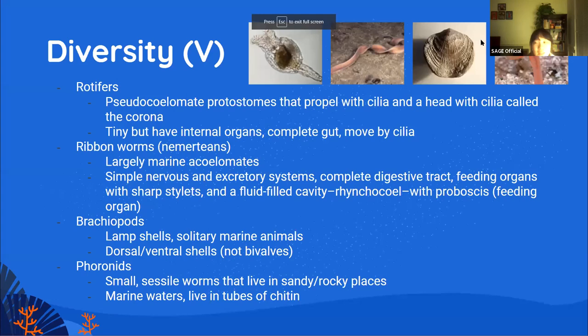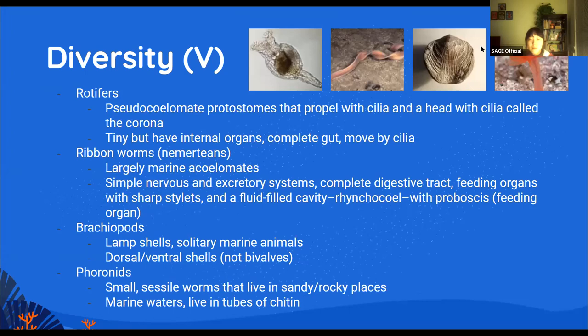Phoronids live in sandy and rocky places. The main cool thing about them is that they live in tubes made of chitin — if you remember from our fungi lesson, chitin is found in fungal cell walls, and phoronids also secrete chitin, producing it themselves to make their homes.